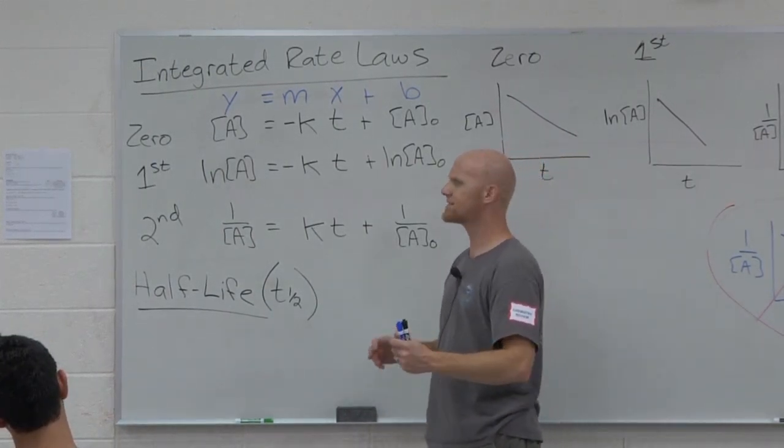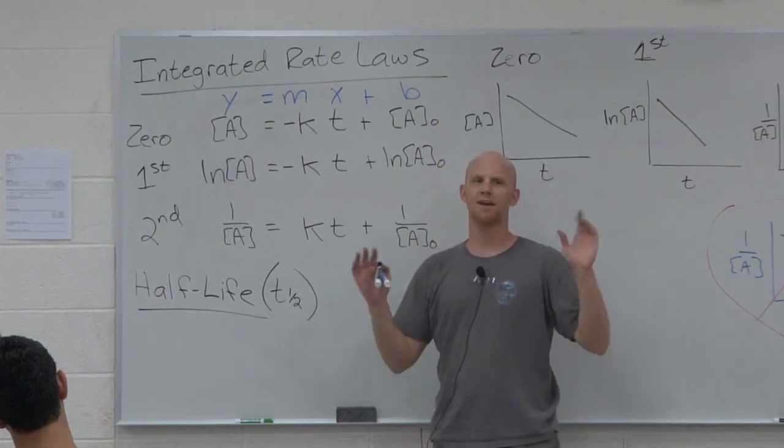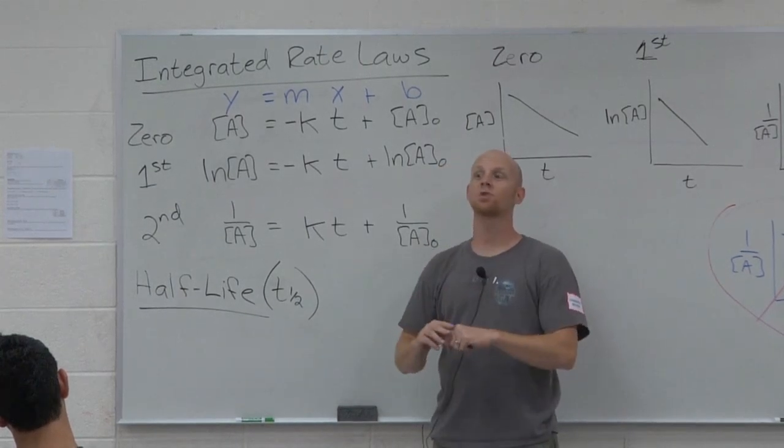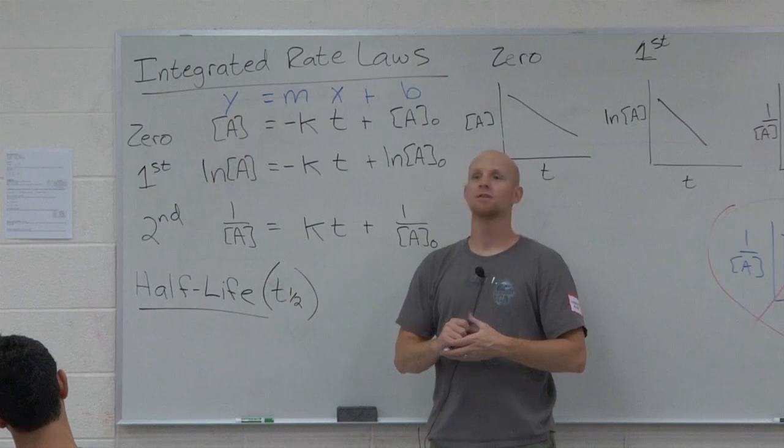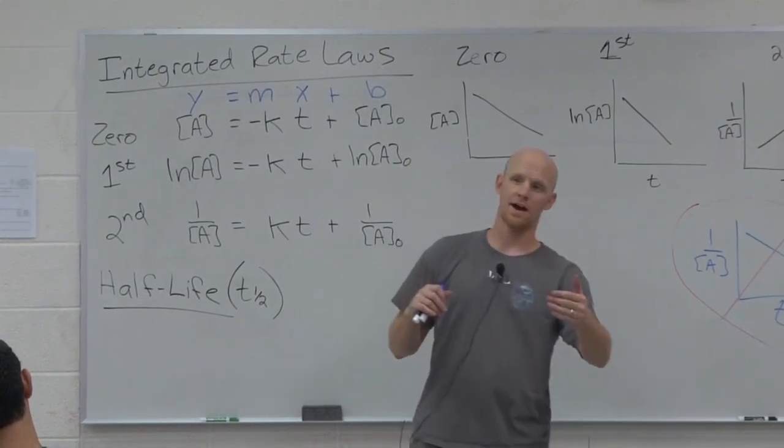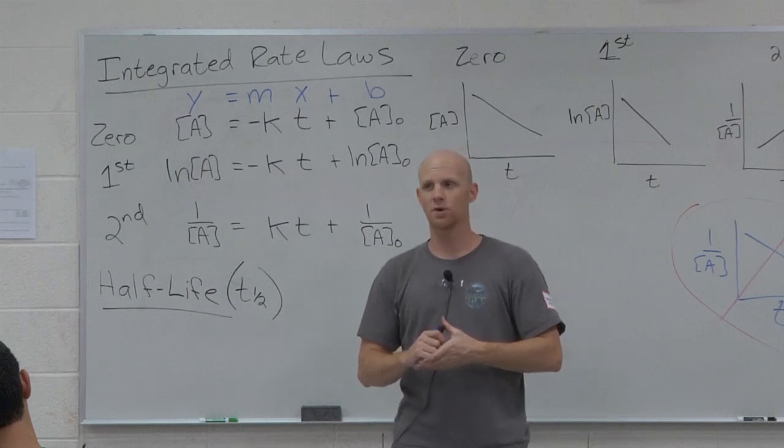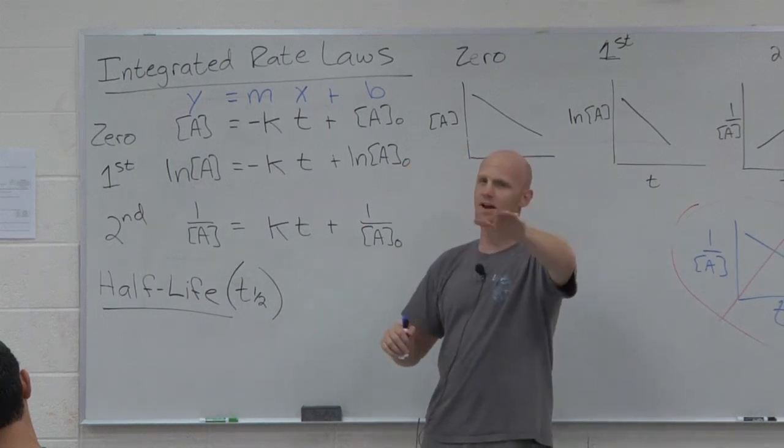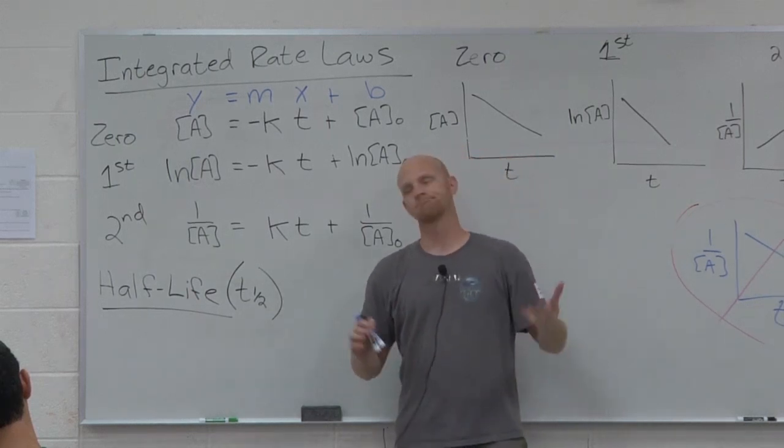So if I started out with a 10 molar concentration of some reactant, how much would be left after one half-life? Five molar. Sweet. How much would be left after another half-life? Two and a half molar. And so on and so forth. You just keep dividing by two for every half-life you go through.